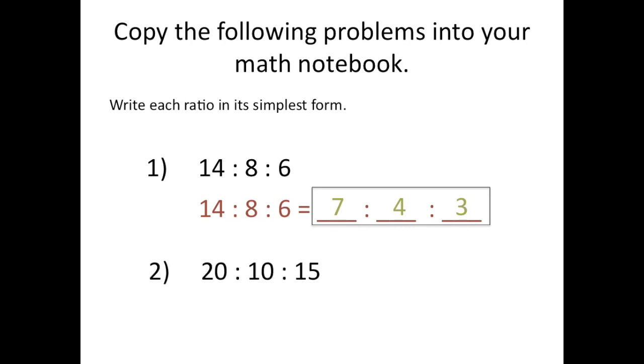Now let's go ahead and try one more. Write down 20 to 10 to 15. And again we're going to want to ask ourselves 20 to 10 to 15 is equal to or the same as what to what to what? So we're going to look for another common factor. And we want to find the greatest common factor so that we can divide and get our ratio in simplest form. So pause the video and give it a try. When you're ready for the answer click play.